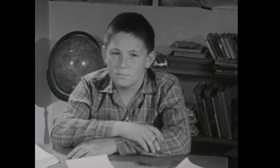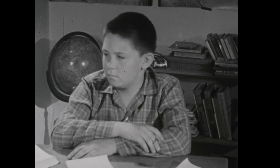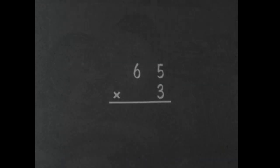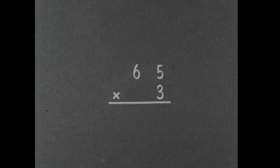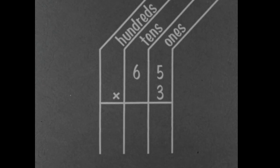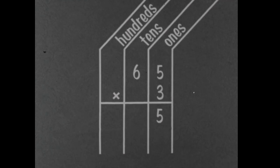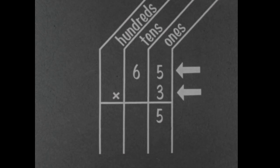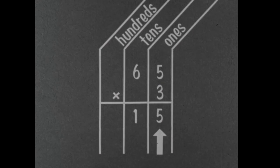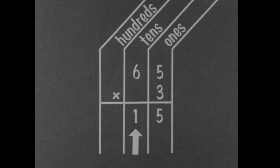Do you know what you really do when you multiply? Well, let's look at this example again. Let's think of place value. When you say 3 times 5 is 15, you write 5 in the 1's place and carry 1. But what you really mean is this: 3 ones times 5 ones equals 15 ones, or 1 ten and 5 ones. You put down the 5 ones and the 1 ten you keep in your mind.